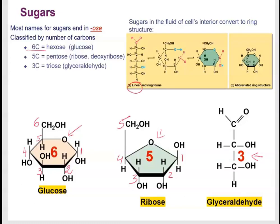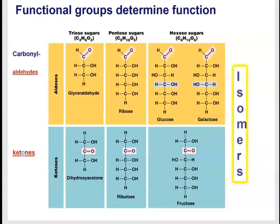A linear glucose molecule can form a ring structure, which is the form typically seen in aqueous solutions. Functional groups determine function: carbonyl groups — such as aldehydes and ketones — illustrate the diversity in sugar molecules and the location of functional groups.